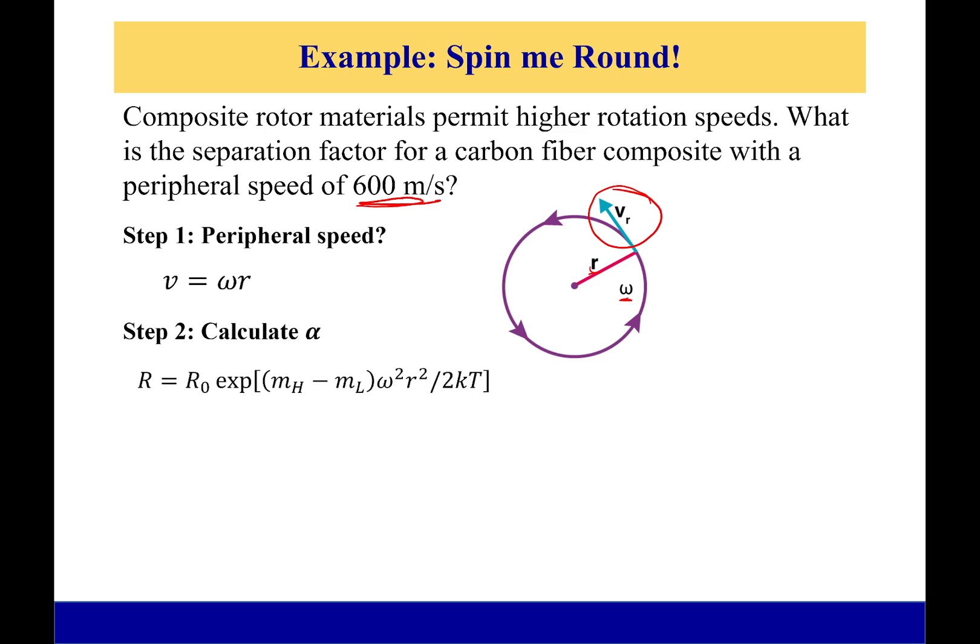With that in mind, let's go ahead and calculate our separation factor. We have this equation from earlier. Our separation factor is equal to how much my natural abundance or my abundance ratio has changed from one stage to the other, and so I can realize that's just my ratio then of my abundance afterwards to my abundance before. Also, I went ahead and changed this from being equal to my angular velocity squared times my radius squared to just being equal to the peripheral velocity squared.